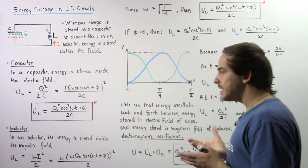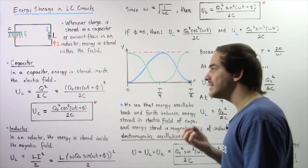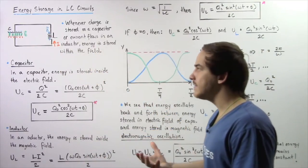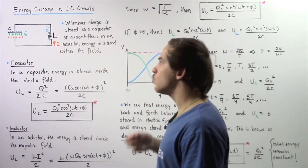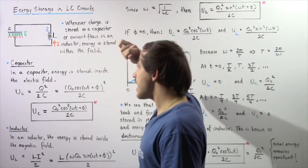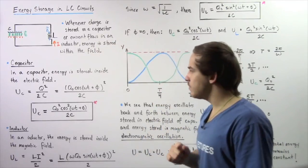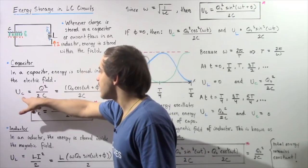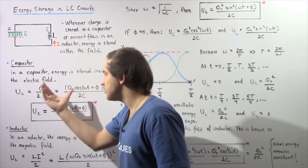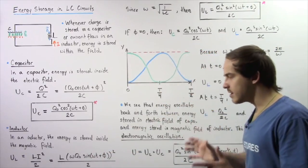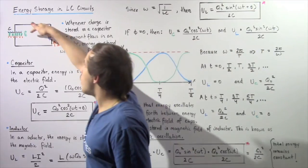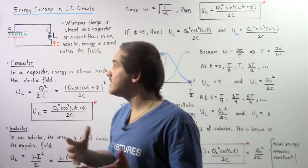Let's begin by defining our equation for the quantity of energy stored within the capacitor, and then the equation for energy stored inside our inductor with respect to time. In the capacitor, energy is stored inside the electric field. From our discussion on energy storage in capacitors, the electric energy stored inside the capacitor is equal to q squared divided by 2C, where C is the capacitance and q is the electric charge stored on the plates. Electric charge depends on time, so as time increases, the quantity of charge stored on the capacitor will decrease, at least initially.